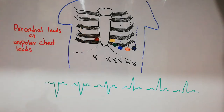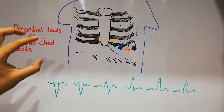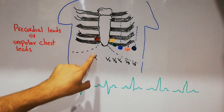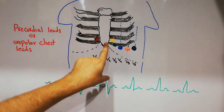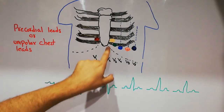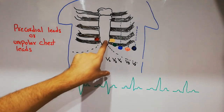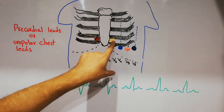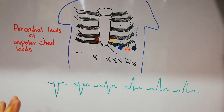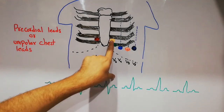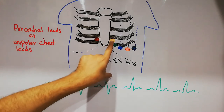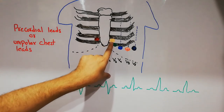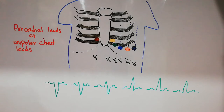The lead attached to V1 is red in color. The second chest lead, V2, is present in the fourth intercostal space on the left side of the sternum, and it is attached to a lead that is yellow in color.